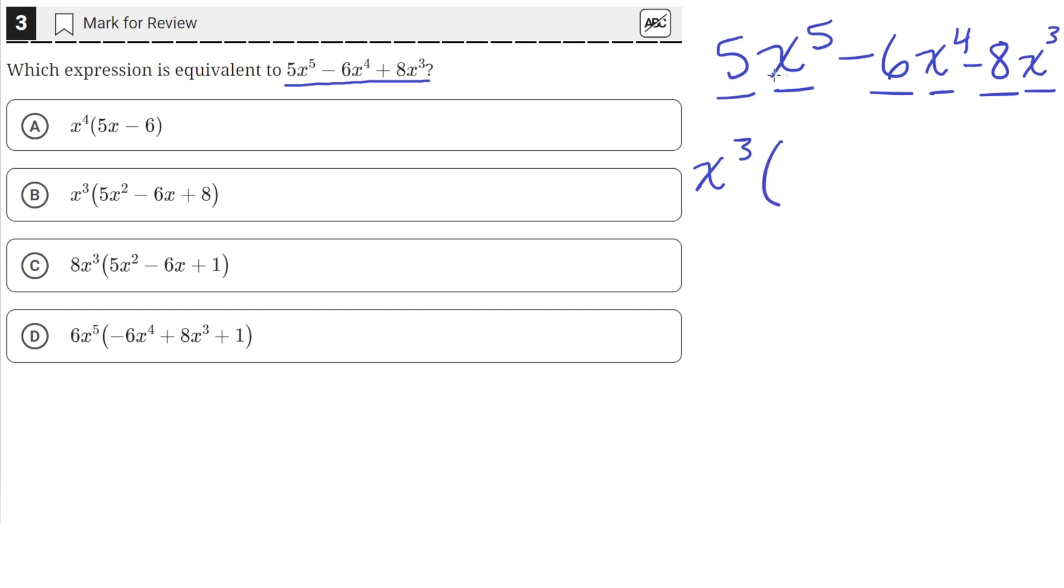So if we take an x to the 3rd factor out, the first expression will just have a 5x squared left over. Because when you multiply x cubed with x squared, you have to add the exponents together. So 3 plus 2 is 5, and then 5 stays out as a coefficient, and that will give us back the original term.